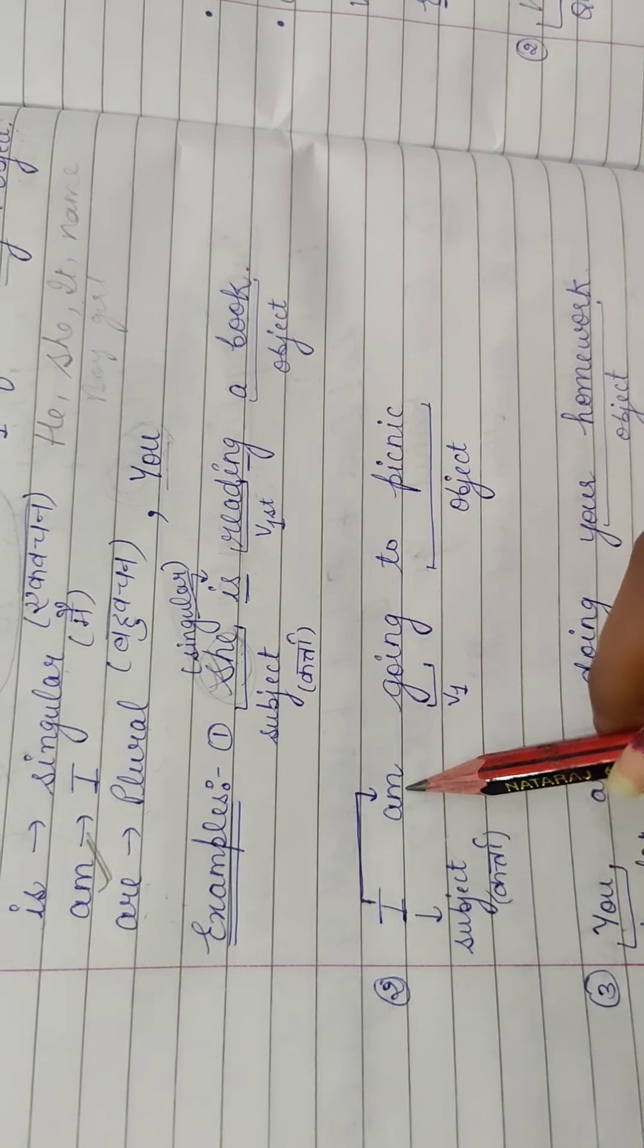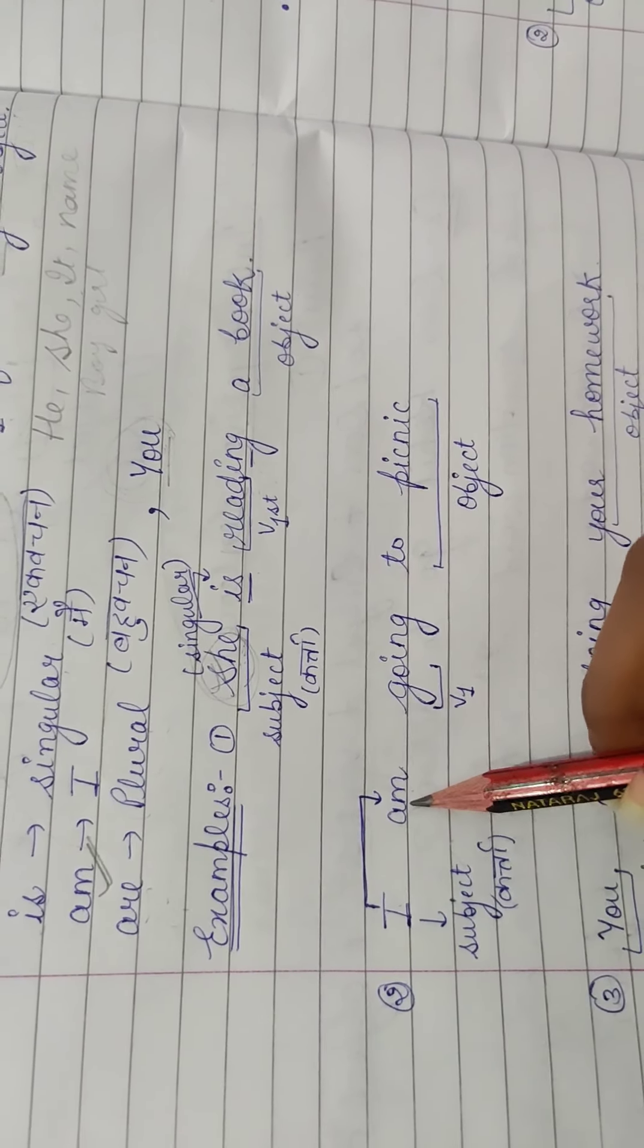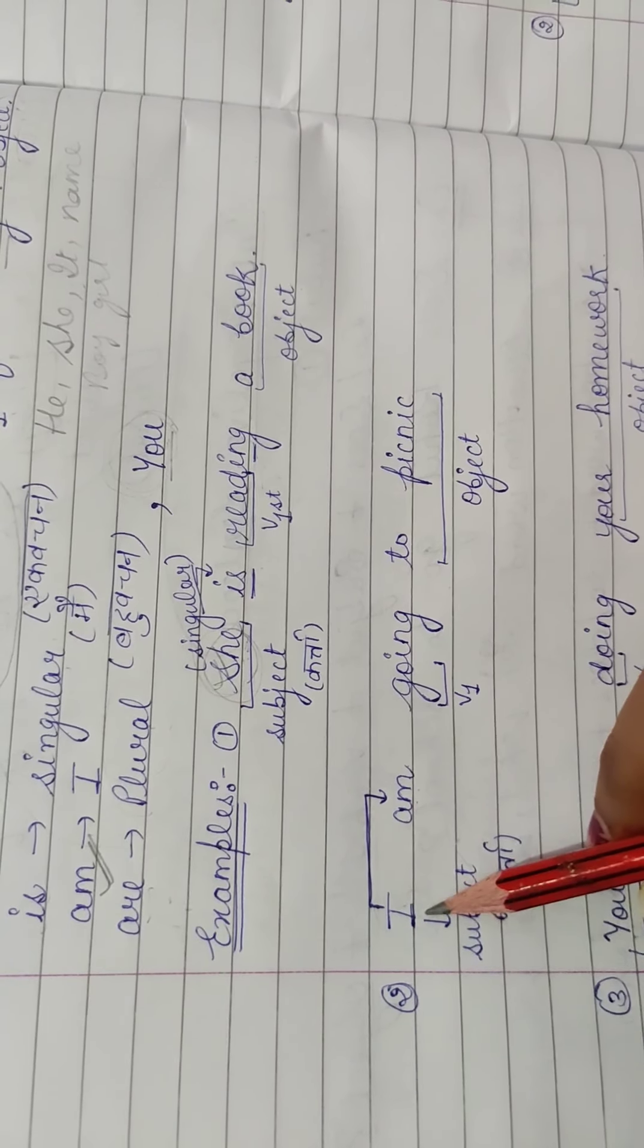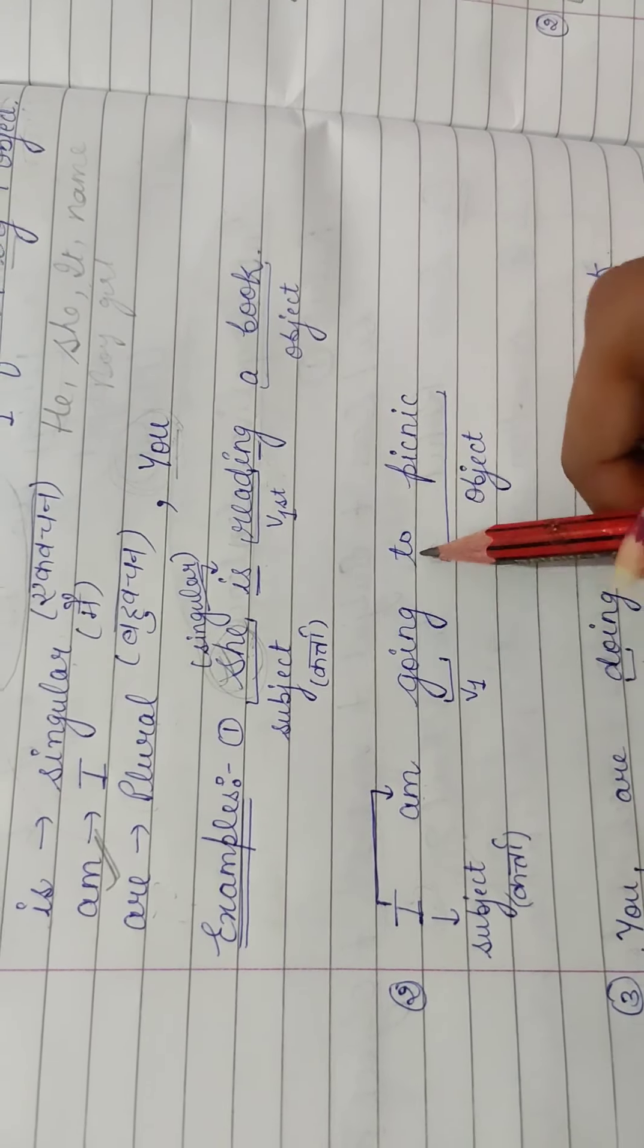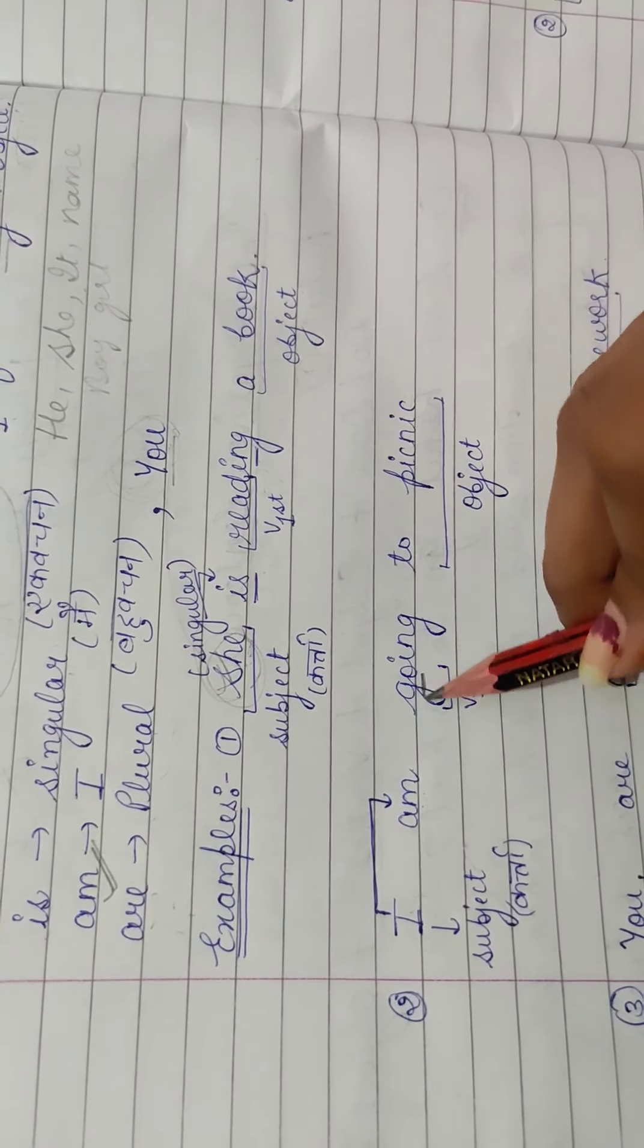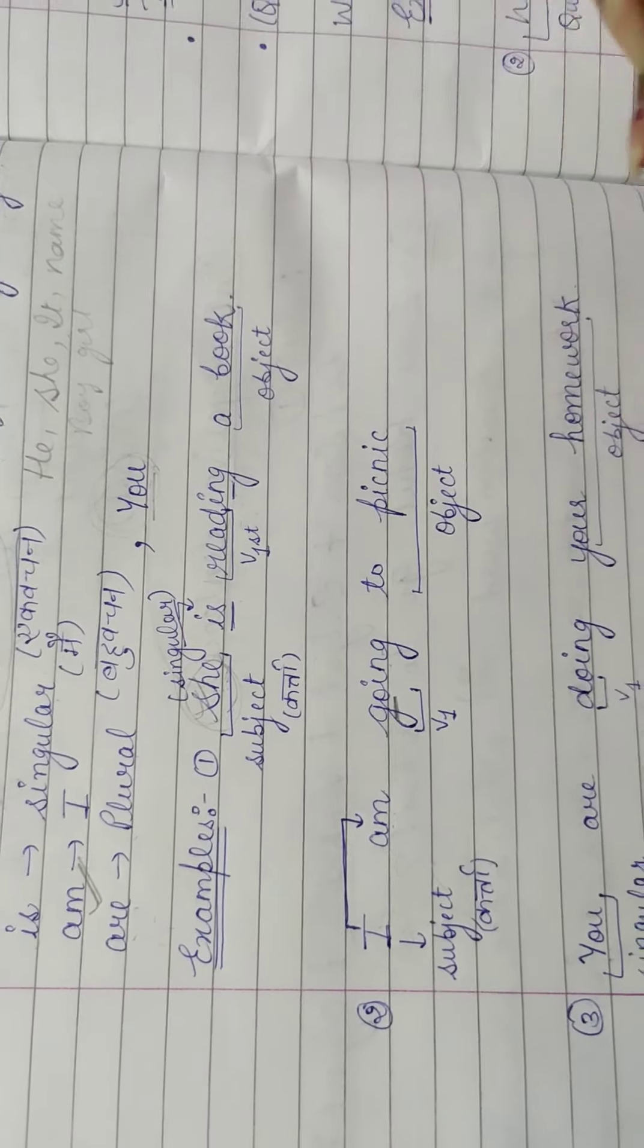Us ke baad, humara ata hai - to aapko subject hoga ye, kaam karana waala jo hai, karta jo hai, subject hoga ye. I am going to picnic. Main hain picnic liya jara hao. To go woh ki first form hoga, us ke saath ing laga diya. Or ye object hoga ya, aapka.